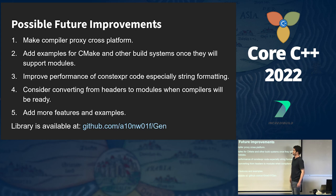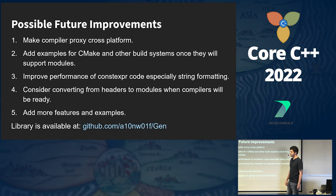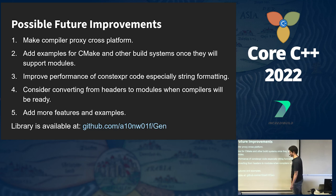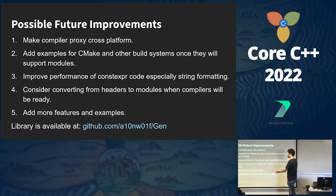Possible future improvements: make compiler proxy cross-platform — most of the Windows-specific code is for process creation and I've already started looking at Boost.Process to replace it. Add examples for CMake and other build systems once they support modules. Improve performance of constexpr code, especially string formatting — right now it simply concatenates strings, which is incredibly inefficient. Consider converting from headers to modules when compilers are ready. And add more features and examples.